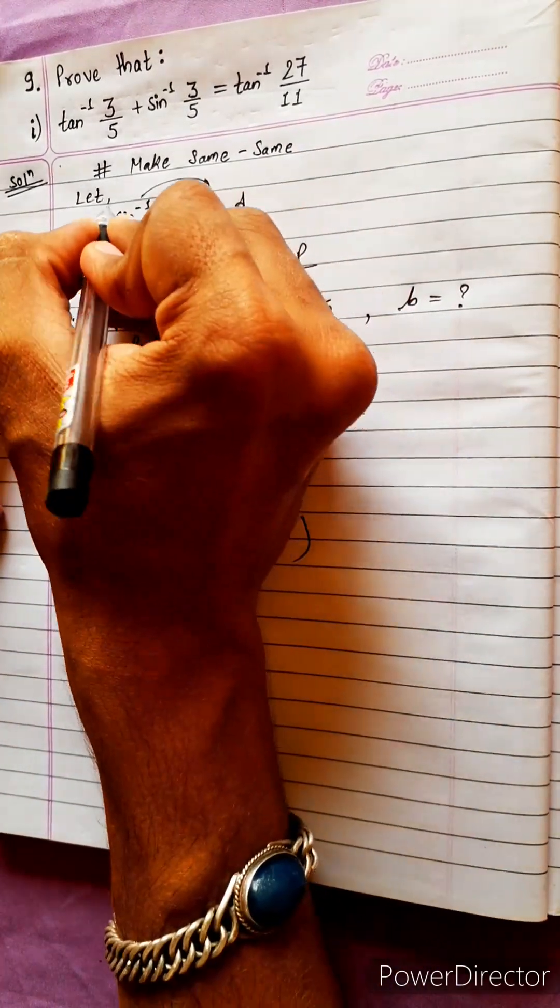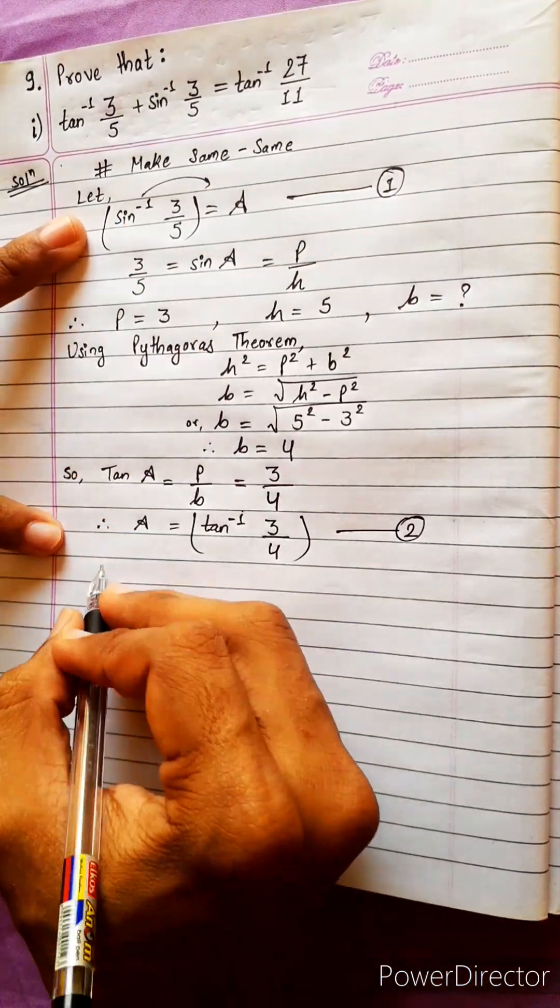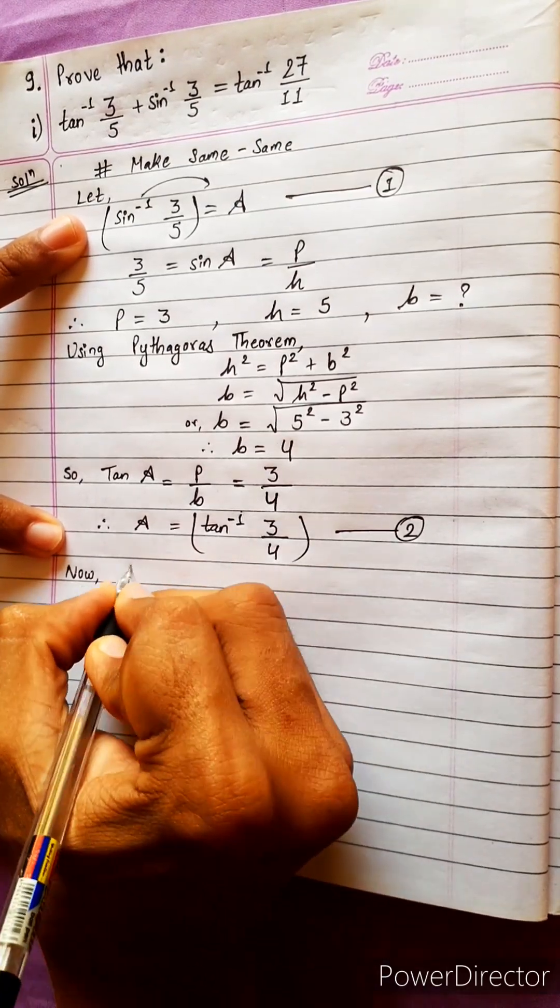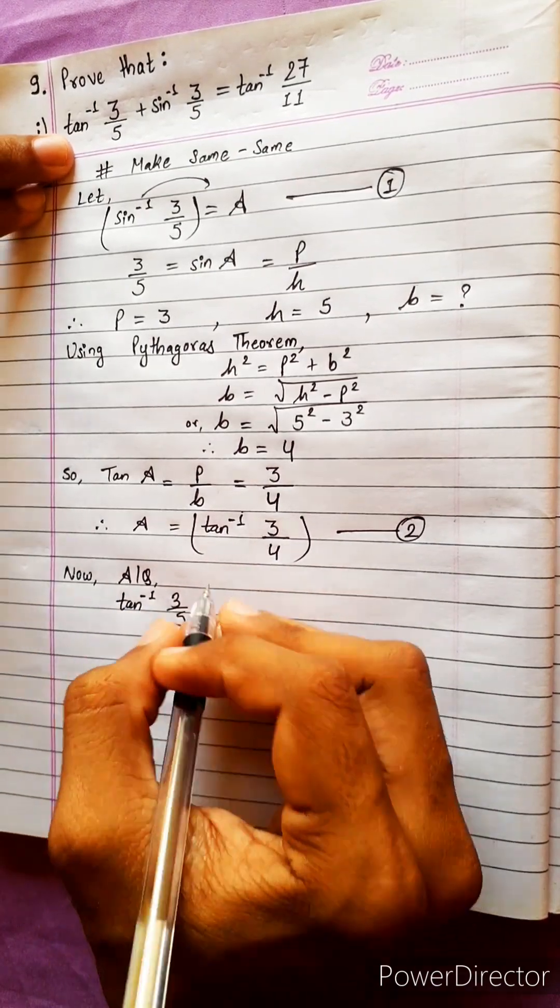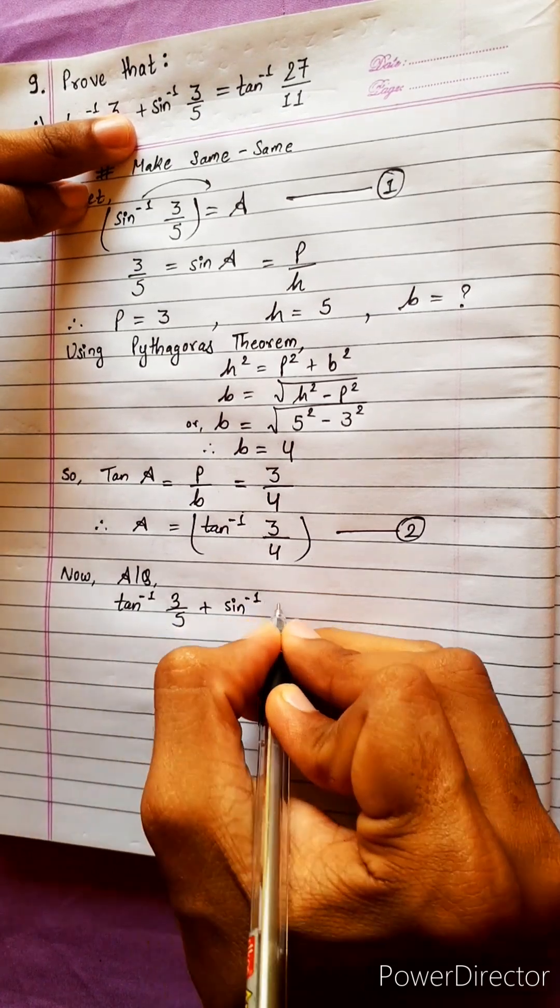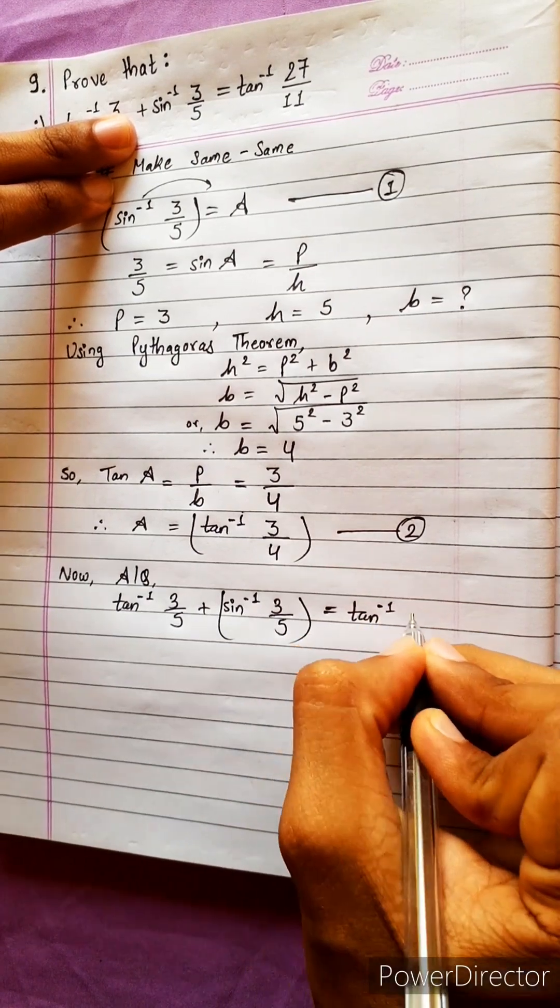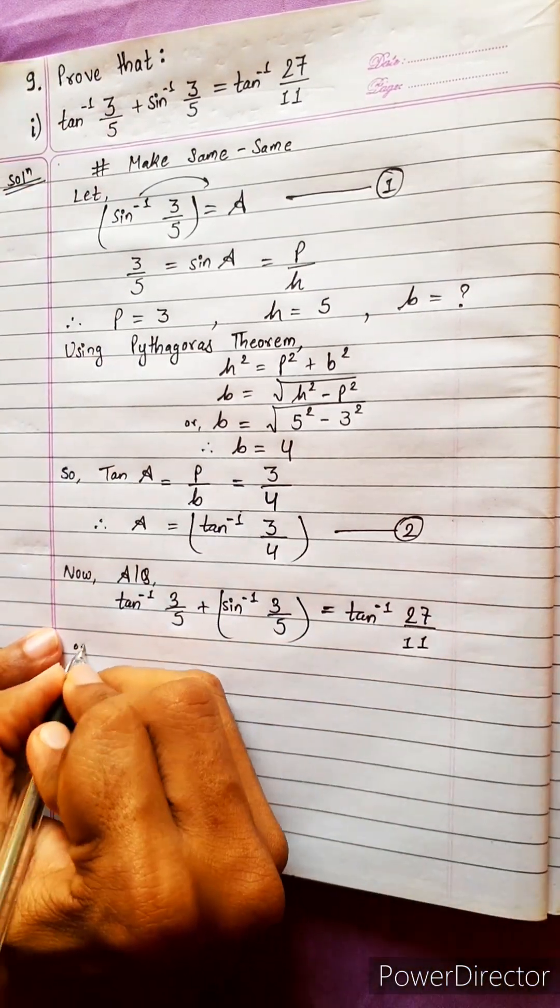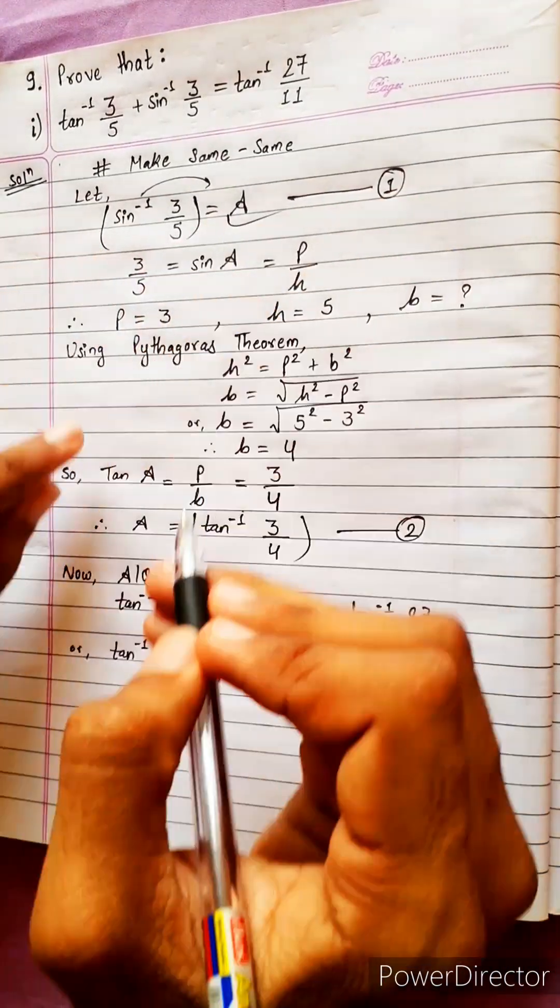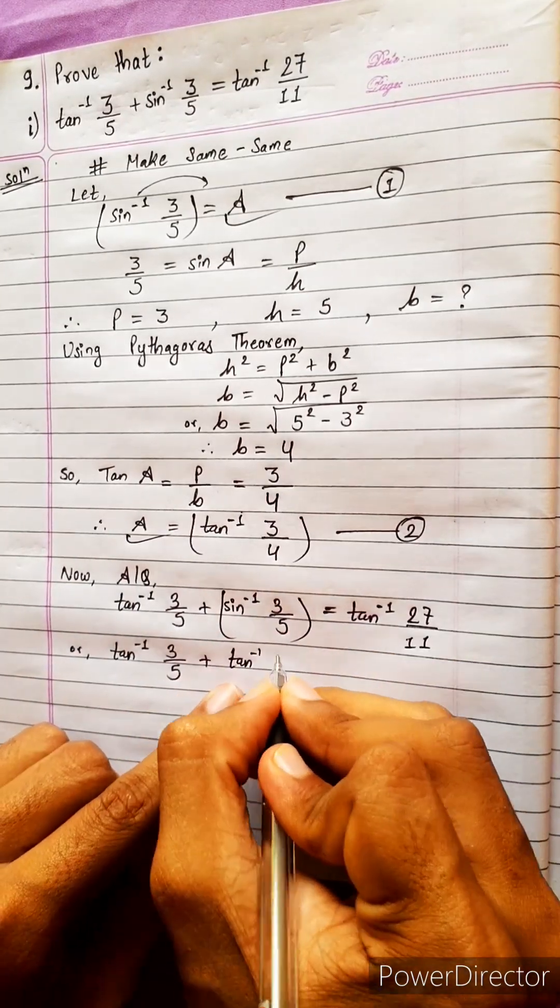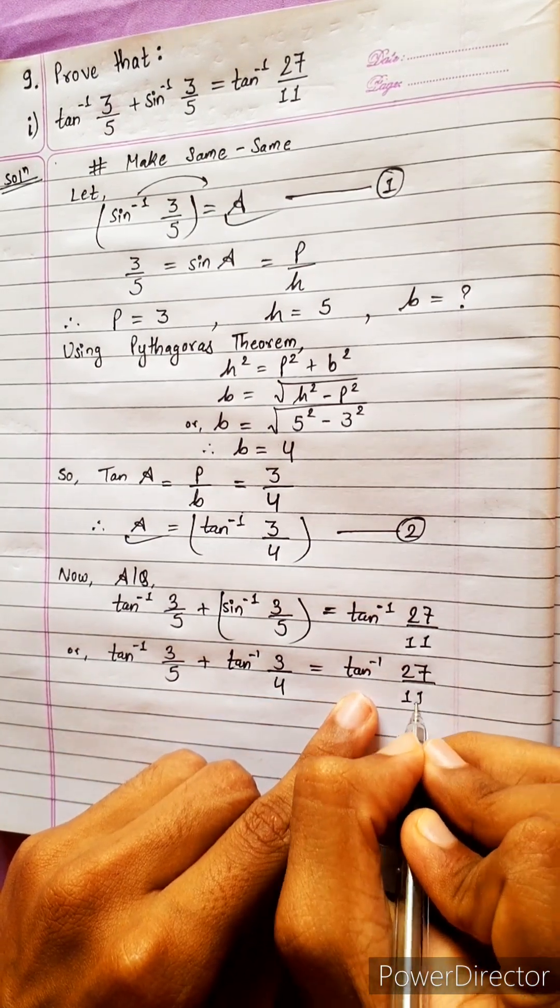Now according to question, we have tan inverse 3 by 5 plus sin inverse 3 by 5, which equals tan inverse 3 by 4, equals tan inverse 27 by 11.